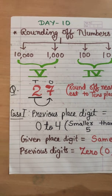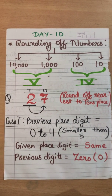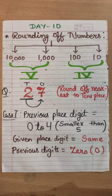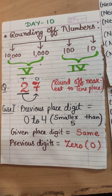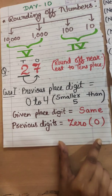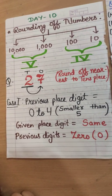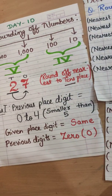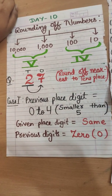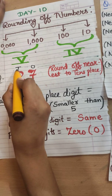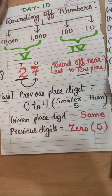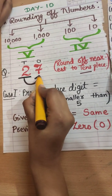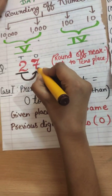Let's revise rounding off to the nearest tens place. For example, you have the number 27 and you have to round it off to the nearest tens place. While rounding off numbers, we have two cases. First, we find where the tens place is in the given number. In 27, the 2 is at the tens place. We then look at the previous place digit, which is 7.